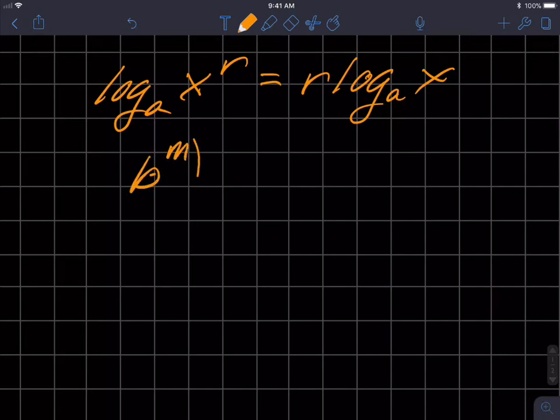b to the m raised to the n. So when I have this exponent, I'm raising it to another exponent. Think about it, I have an exponent raising it to an exponent. I multiply those guys. So here's an exponent being multiplied times another exponent. It's going to be b to the m times n.